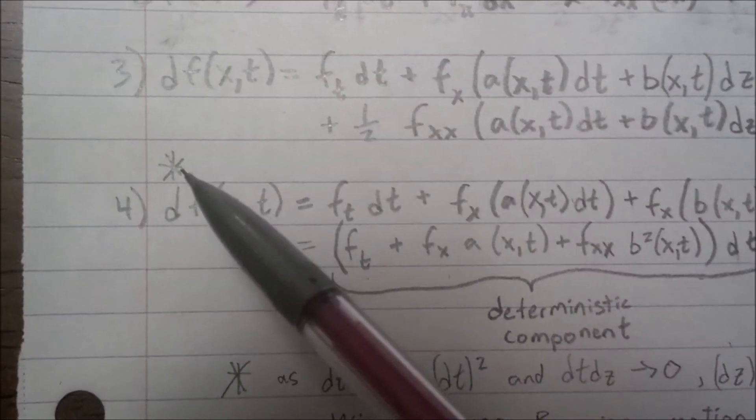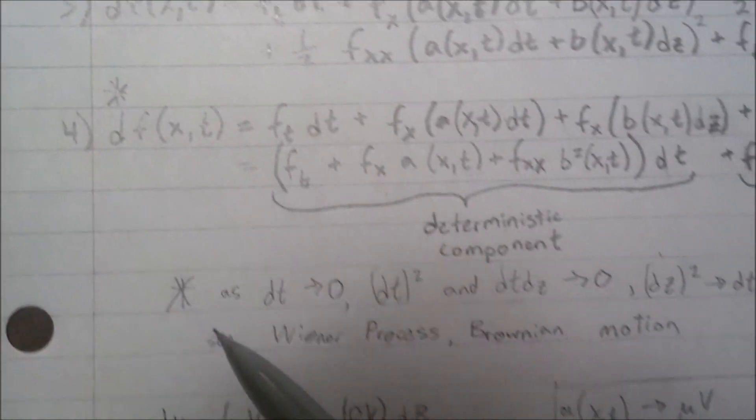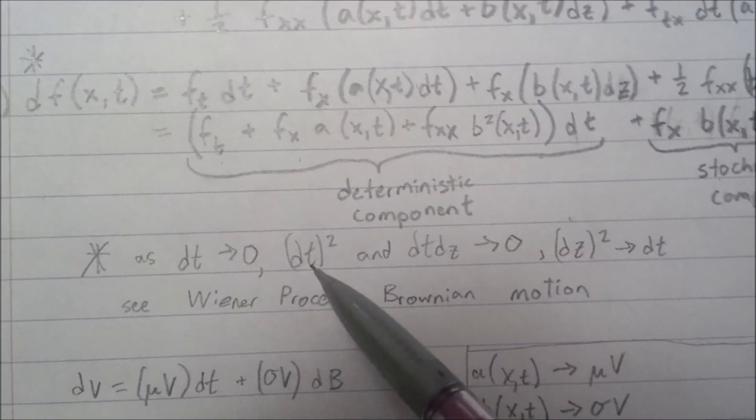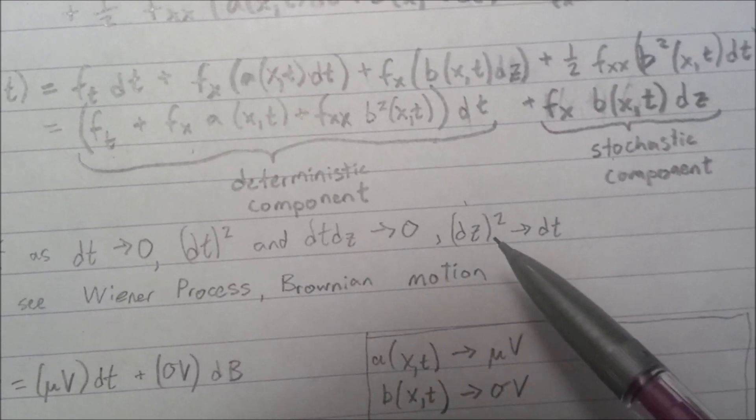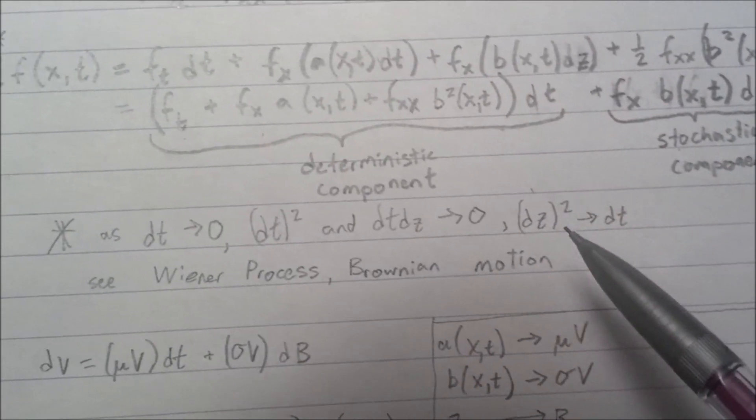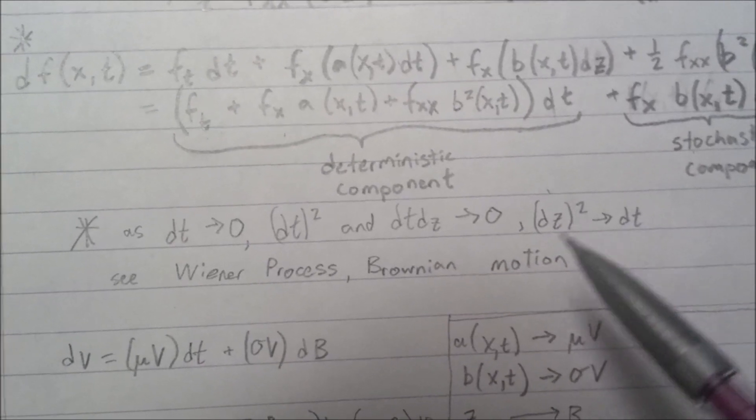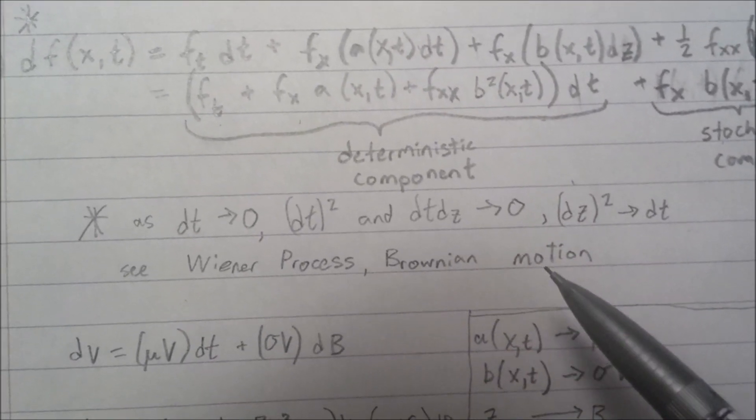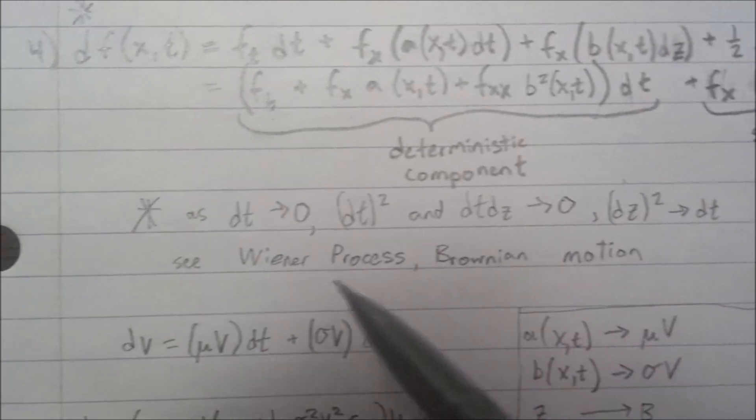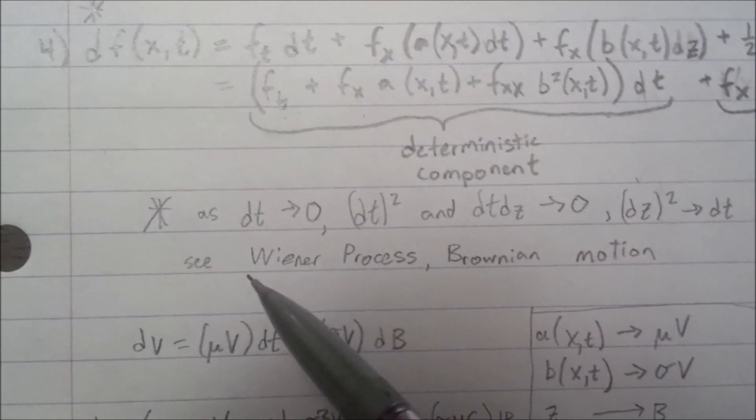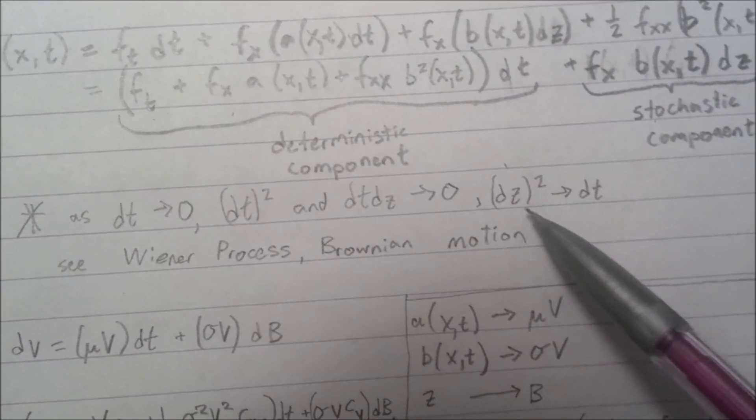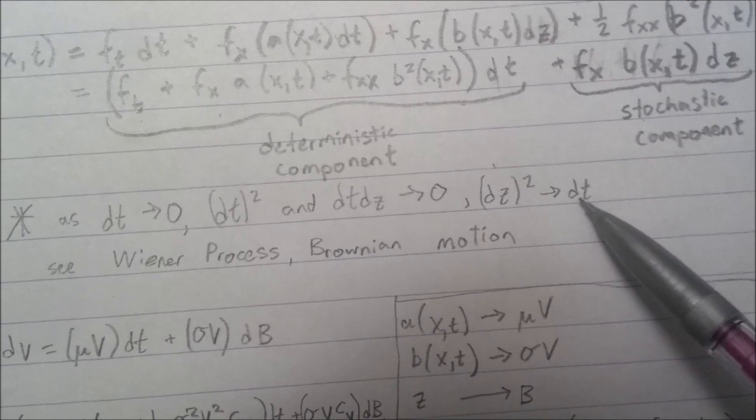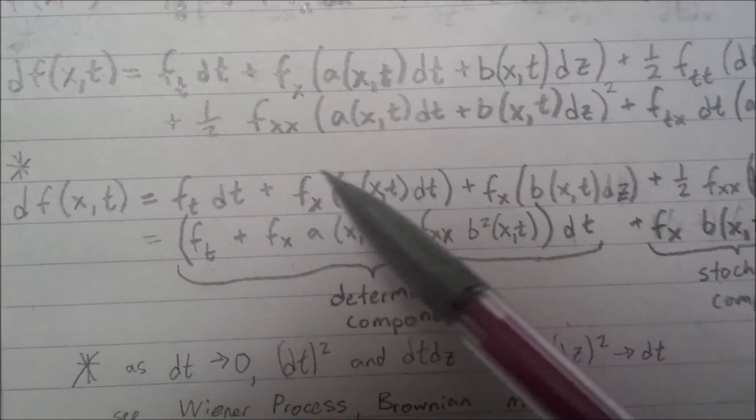The next step requires a leap, and I'm going to explain that leap. The star, as you can see, as dt goes to 0, dt squared and dt dz go to 0, and dz squared goes to dt. And the reason for that is because dz represents Brownian motion. It represents a random variable. So if you want to see more about the reason, you can look up Wiener process and Brownian motion. But this is the big leap that we have to take in this step. And because we take that leap, we can do all the substitutions.